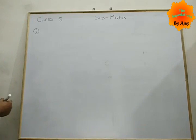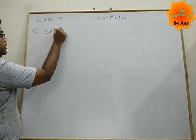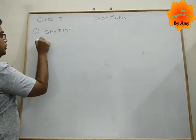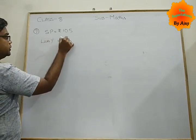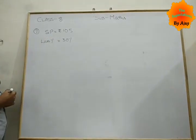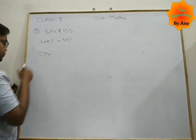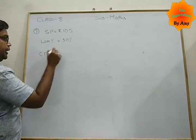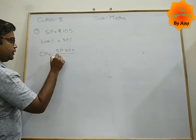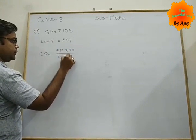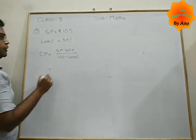Let's start. First, write down what is given in your question. It is your selling price Rs. 105, loss percentage is 30%. So what is your CP? From that formula we know that CP equals SP into 100 by 100 minus loss percent.